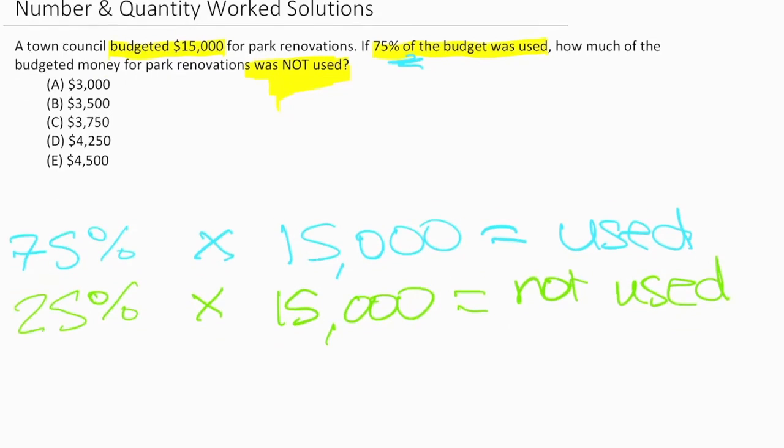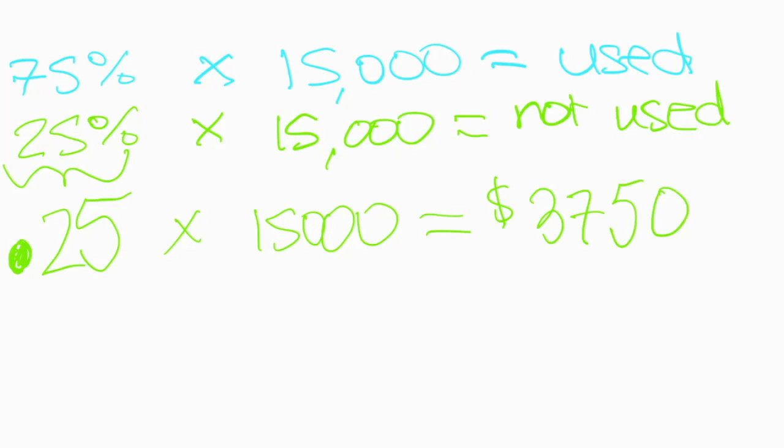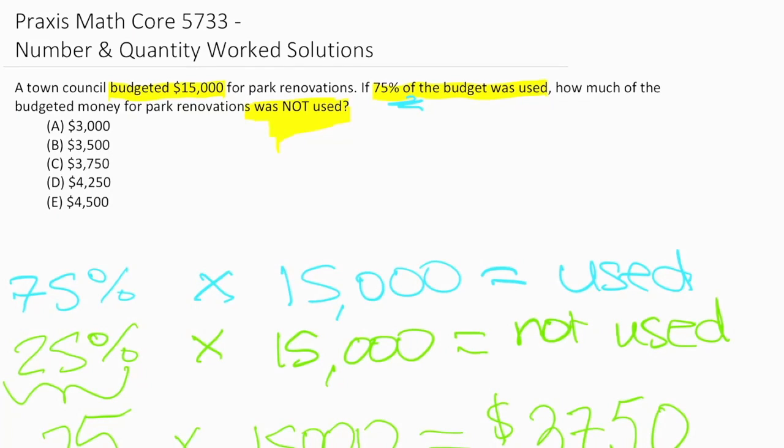To solve this problem, we need to take that percentage and convert it to a decimal so we can plug it into our calculator. We would write 25% as 0.25 as a decimal times $15,000, and that's going to give us our answer. When we plug that into our calculator, we see that the answer is $3,750. Let's go back up to our answer choices and find our answer. We can see that the correct answer is letter C, $3,750 remains.